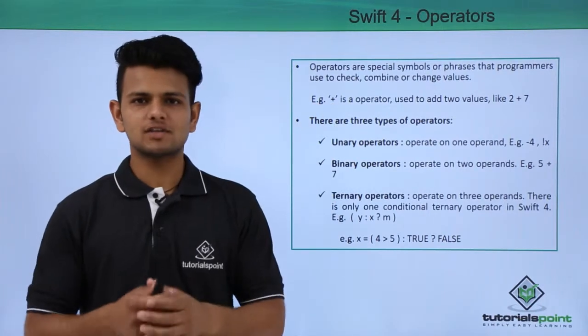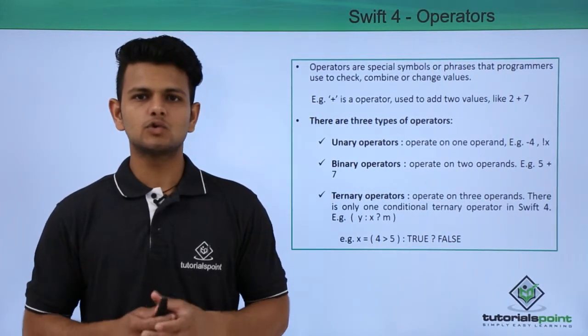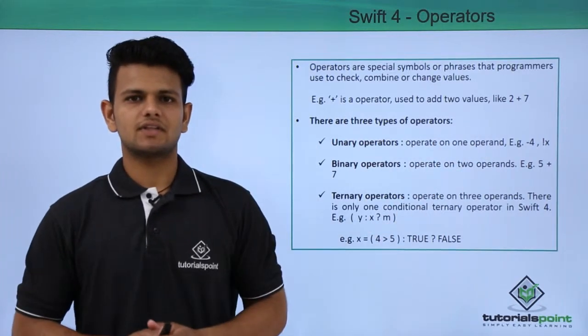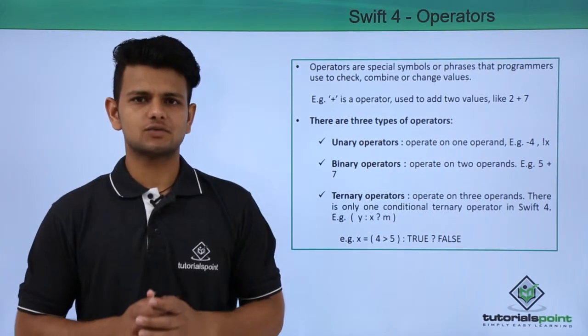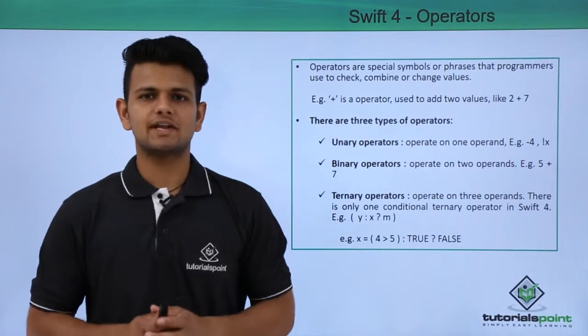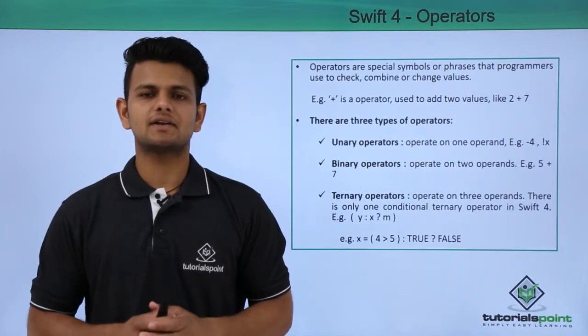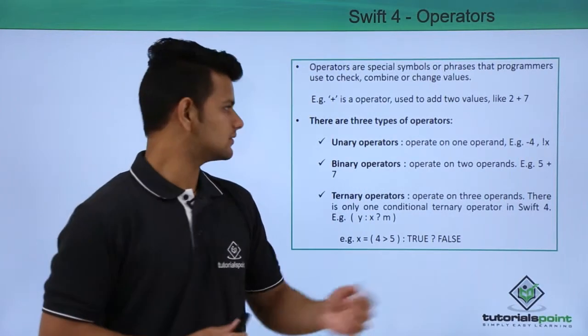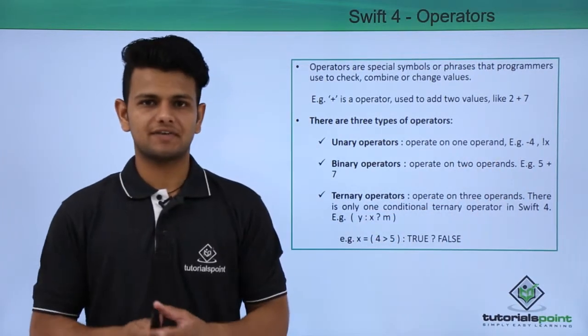In this example, plus is an operator which is applied on two operands, 2 and 7. There are three types of operators in Swift. First is unary operator. A unary operator is applied on only a single operand, like minus 4 or not of x.